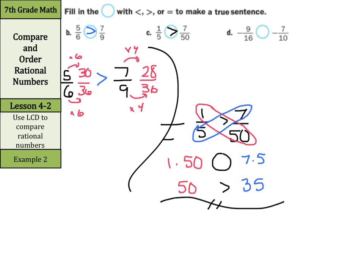If you found common denominators for this one, you would have 1 fifth converting into fiftieths in order to compare to 7 fiftieths. And then you would multiply by 10 and 10 and get 10 fiftieths is greater than 7 fiftieths. So either way you want to work it, you'll get the same answer.